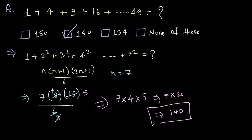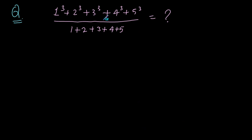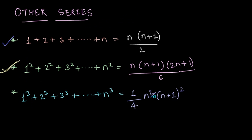Now let's solve another question. What could be the answer for this question? You just have to replace these series with formulas and solve it. Let's see what formulas we need to apply. This is the sum of cubes of natural numbers till 5, so the formula is (1/4)n²(n+1)².